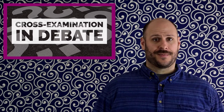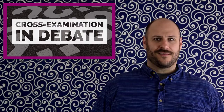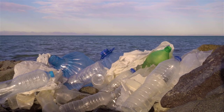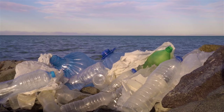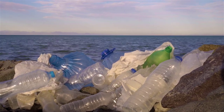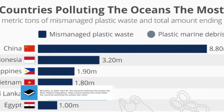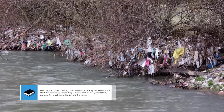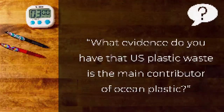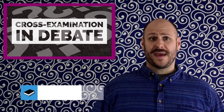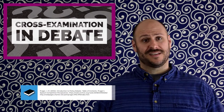One of the most common mistakes that debaters make is misunderstanding empirical evidence. This is particularly true at the link level of the debate. Consider a debate where the affirmative is arguing that the United States should ban single-use plastics to stop the flow of pollution into our oceans. However, as the negative team, you know that the majority of single-use plastic that ends up in the ocean comes from river dumping in China. You might ask the affirmative, "What evidence do you have that U.S. plastic waste is the main contributor of ocean plastic?" Their inability to formally answer the question will help you make a stronger refutation argument later in the round.